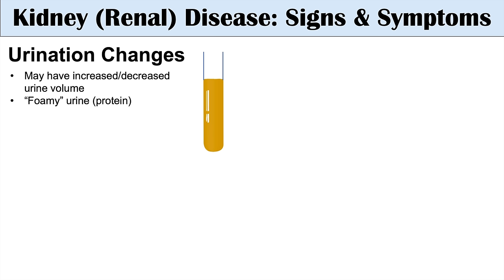Some other disease states of the kidney can lead to foamy urine, which means there may be protein in your urine. And in some cases, there may also be blood in the urine, so hematuria.